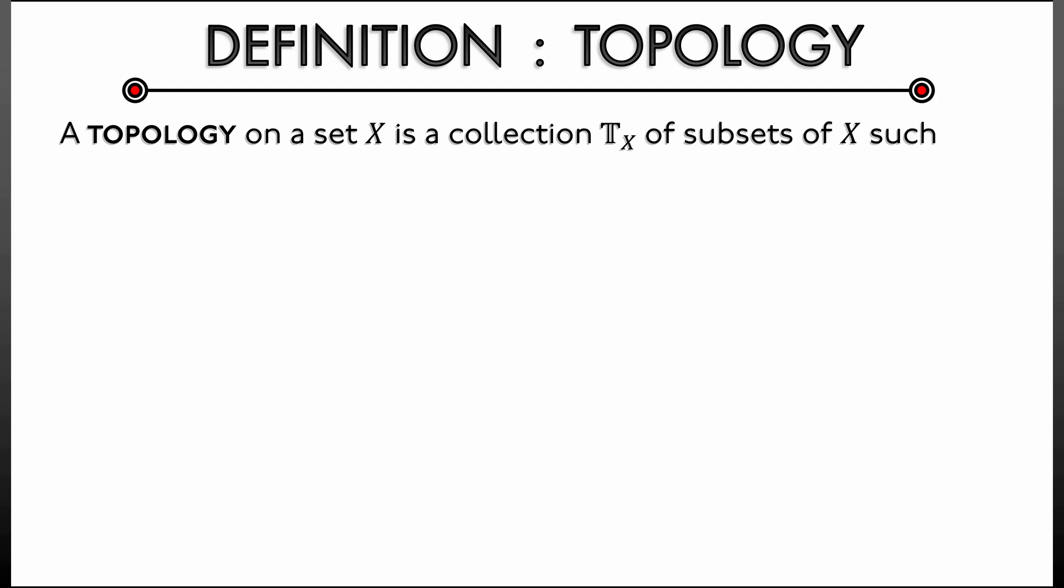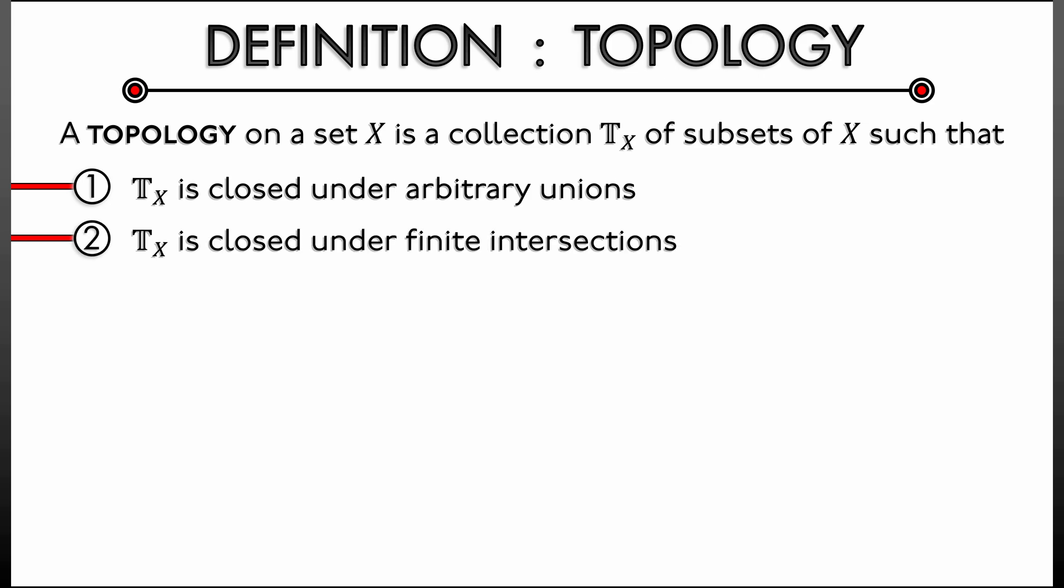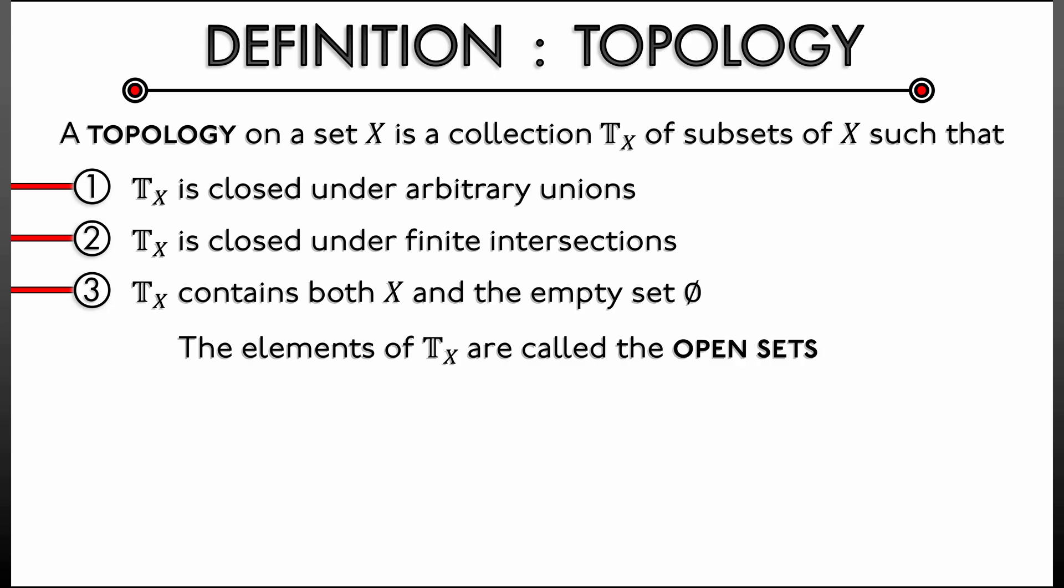So let's ascend to a different world and take some time and talk about the definition of a topological space. We're going to have to define a topology on a set. A topology on a set X is a collection, capital T, of subsets of X that satisfy the following properties: This collection is closed under arbitrary unions, it's closed under finite intersections, and it contains both the full set X and the empty set. These sets, these special sets, these elements of the topology are called the open sets of your space X. And any open set containing a point P is said to be a neighborhood of that point P. That's it, that's what a topology is.